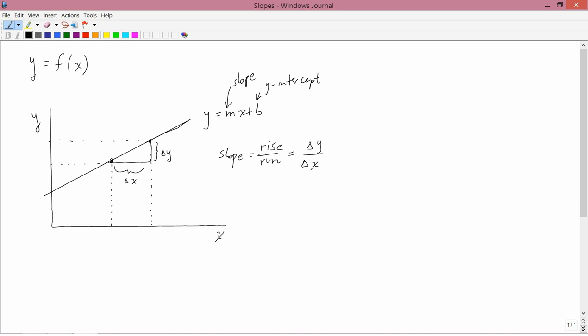For example, I put some numbers here that might make some sense. Suppose this maybe is 10. This is 15. Perhaps this is, I don't know, 4. And maybe this is 6. Then delta y would be the difference between 6 and 4, which is 2. And delta x would be the difference between 15 and 10, which is 5. And so the slope would be 2 fifths. And it doesn't matter which two points you pick on the straight line. They'll all have the same slope.